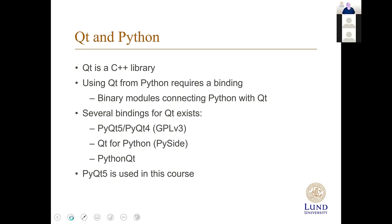Qt is a C++ library, so if you want to write native Qt applications, you usually do that in C++. If you want to use Qt from Python, you need a binding — a binary module that connects Python with the C++ library. There are several bindings: PyQt5 and PyQt4, which we'll use in this course, as well as Qt for Python (PySide), developed by the Qt company. PyQt5 is what we're going to use.